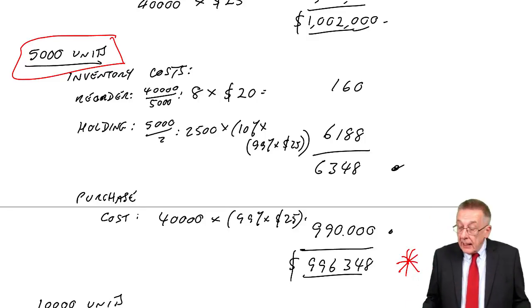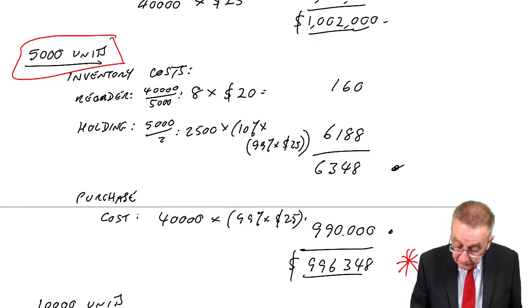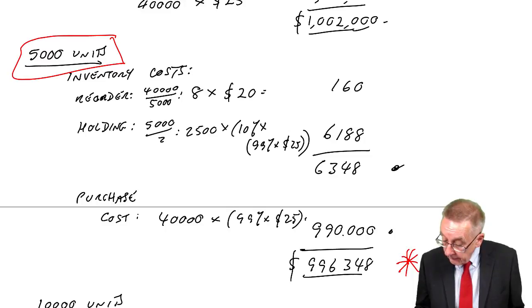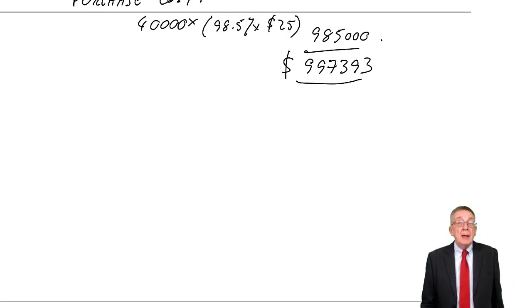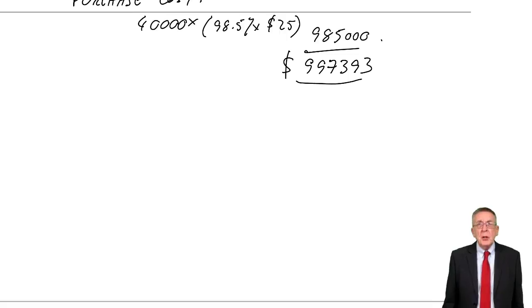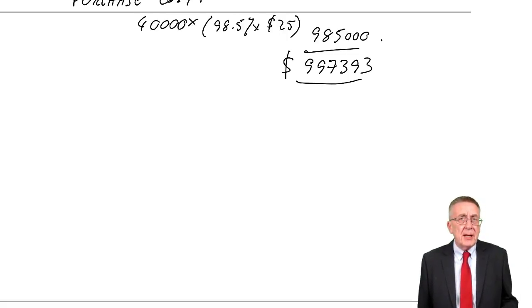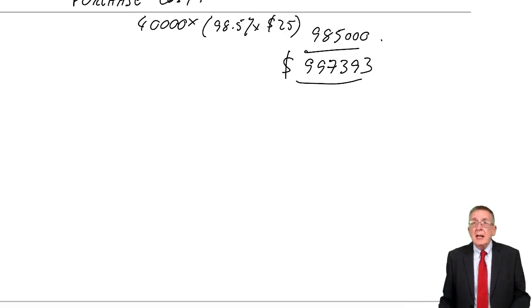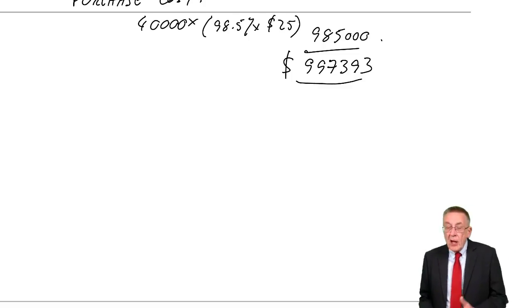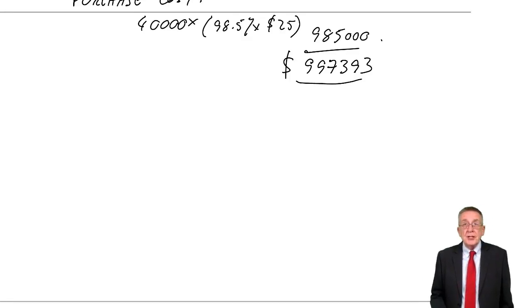That's it really for economic order quantity. If you did pay for F2, you'll know in F2 you were also tested on something called the economic batch quantity. But that isn't tested at F9. It's simply the EOQ. One tiny thing I'd better mention just to be safe.